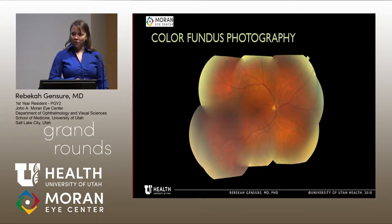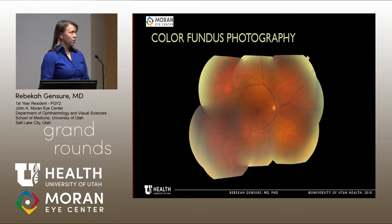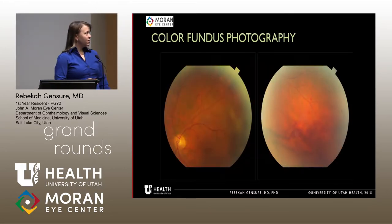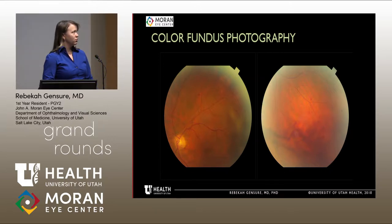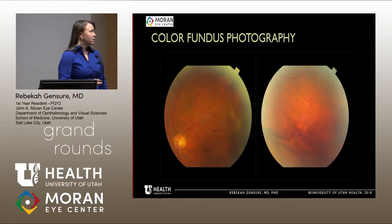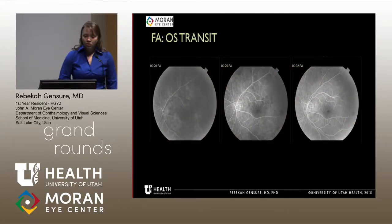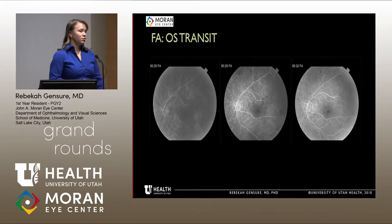Here are the photos. The color fundus photograph of the right eye is unremarkable. The left eye shows diffuse hemorrhages scattered throughout the periphery and dense vitreous hemorrhage infratemporally. We routinely perform fluorescein angiography in uveitis, so we obtained one for this patient.